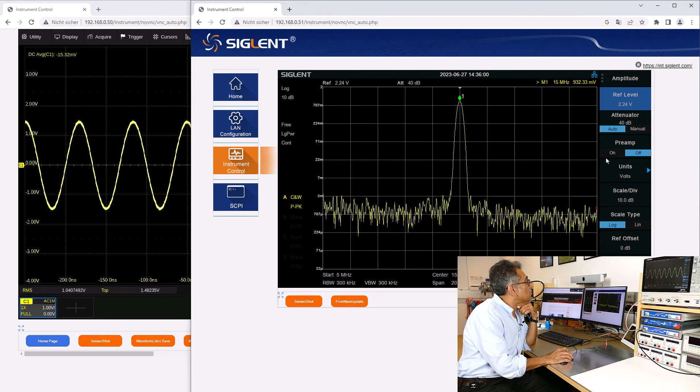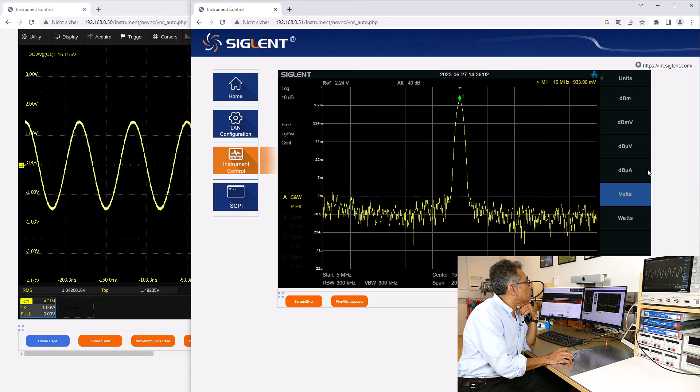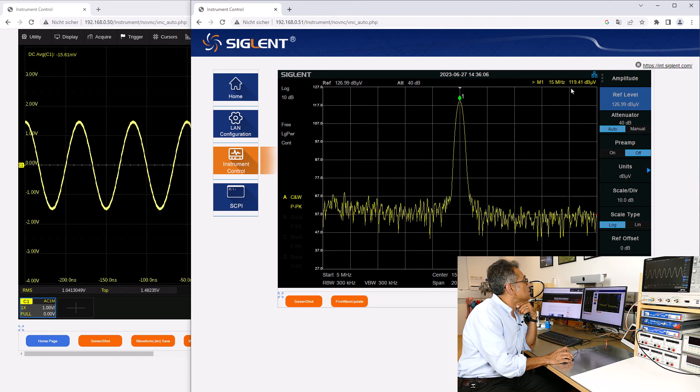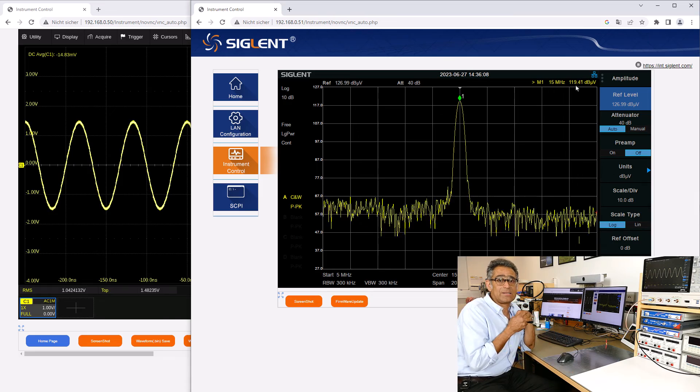and then I can change that to dB microvolts, and we expect to get 120 dB microvolts, which is exactly what we get.